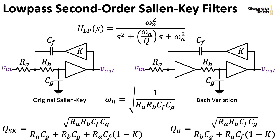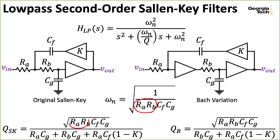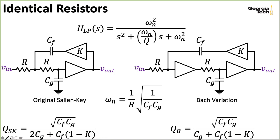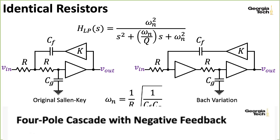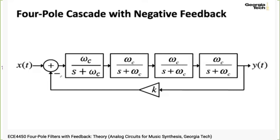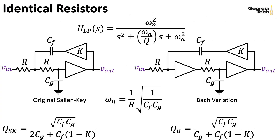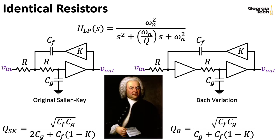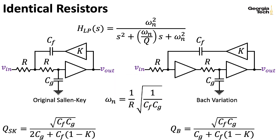These formulas are a handful. We could simplify them greatly by letting the capacitances be the same, or letting the resistances be the same. Here I'm going to let the resistances be the same. The nice thing is that the resistances combine into an R-squared that pulls out of the square root as just an R, and then cancels with the R's in the denominator. So Q winds up being only a function of the capacitances and the feedback K. Now the difference between the original Sallen-Key and the Bach variation is that there is a factor of 2 in front of CG in the original formula, but not in the Bach variation.